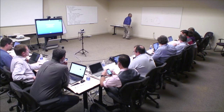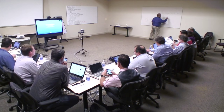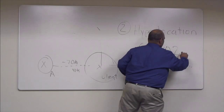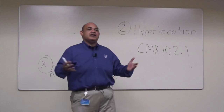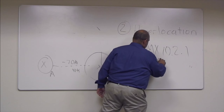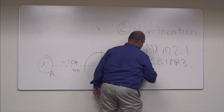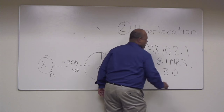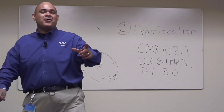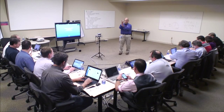The first version supports only associated clients in CMX 10.2.1 software. It requires CMX 10.2.1 to create the location algorithm, WLC 8.1 MR3, and Prime 3.0. Why do I need a new Prime? I need to know the orientation of the AP. With 32 antennas, which is antenna zero? I now need to add this orientation information into Prime to build a map that identifies which antenna is antenna zero.